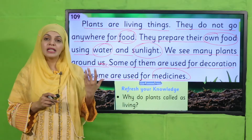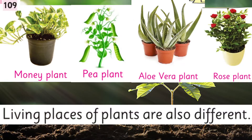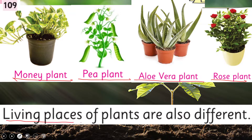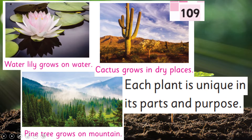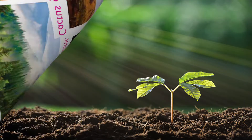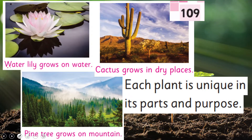You can see money plant, pea plant, aloe vera plant, rose plant. Living places of plants are also different — kuch jo pohde hain unki living places bhi different hoti hain. Kuch dry places mein rehte hain, kuch water mein rehte hain. Water lily grows on water, cactus grows in dry places like deserts, and pine trees grow on mountains.